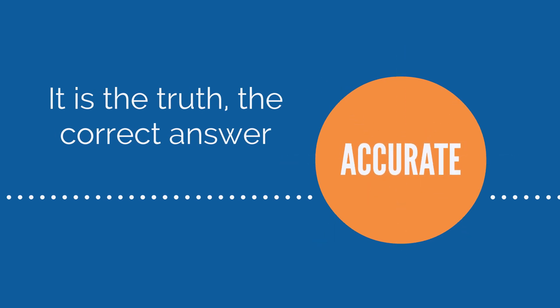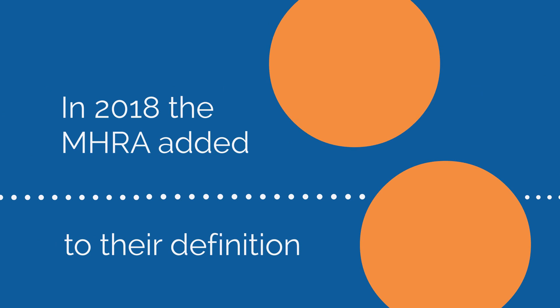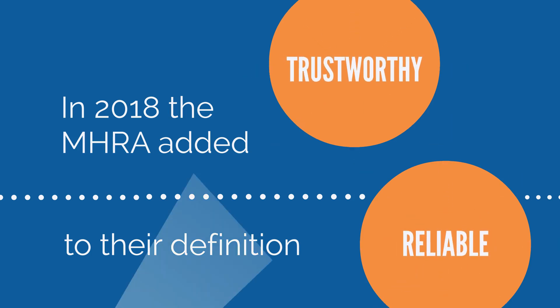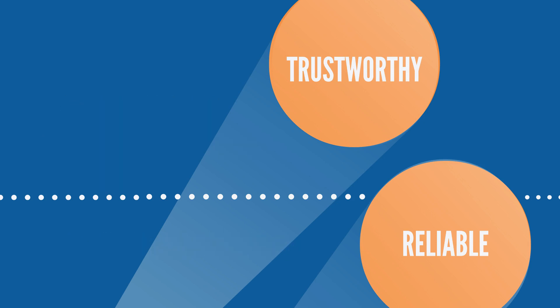In 2018, the MHRA added two new terms to their definition. The MHRA is the UK's regulator. They added that the data needs to be trustworthy and reliable. Adding trustworthy and reliable is actually quite in line with other countries' approaches towards data integrity, but they are challenging in that they are less tangible. They are hard to test for. It's difficult to envisage a test to see if something is trustworthy, but you can certainly tell when it's not trustworthy, when there are elements that don't add up.